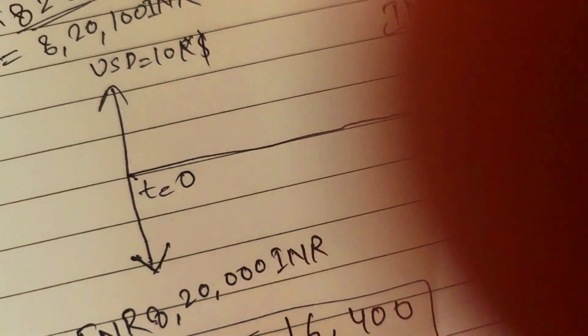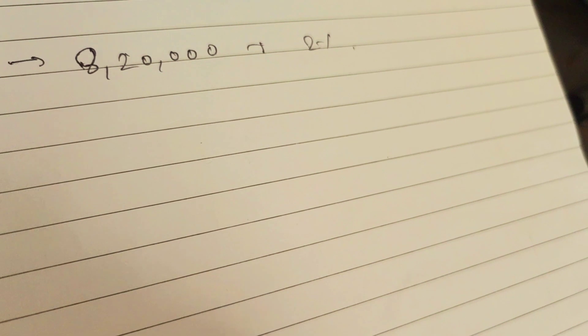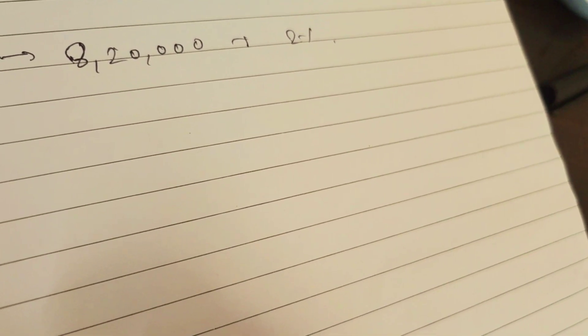Let's see if this person must have taken a loan to even get this 8,20,000 to initiate this transaction. People can utilize the forex swap to minimize their interest. Maybe this person took a loan of this currency from some bank, 8,20,000, and the bank charged 2%.